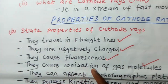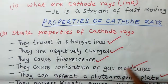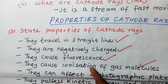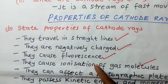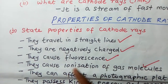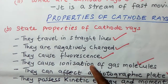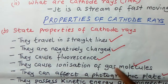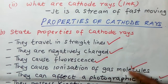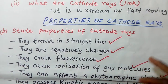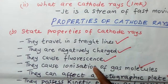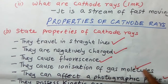They cause ionization of gas molecules. Ionization comes from the word to ionize, and to ionize comes from the word ions. We have only two types of ions: positive ions and negative ions. So when you pass cathode rays where there is a gas molecule, the cathode rays will make those gas molecules to have ions — to possess either positive charges or negative charges. That's what we call ionization.